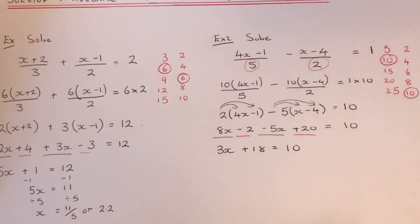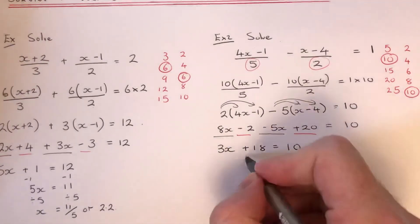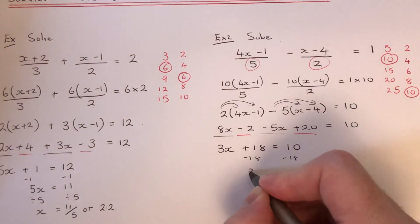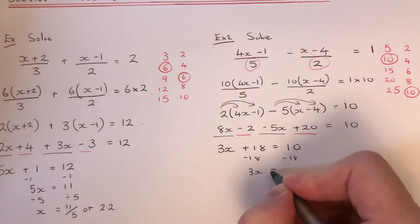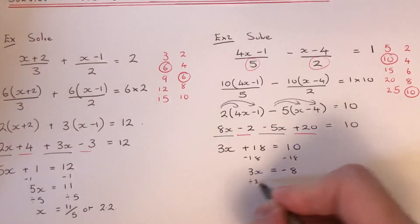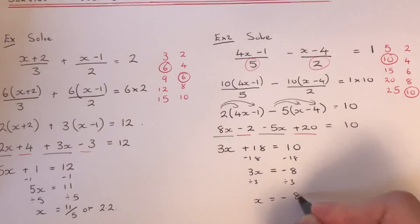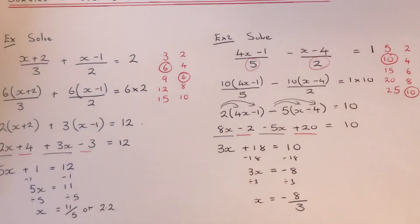We now just need to do the opposites to find the value of x. The opposite to plus 18 is minus 18. So that will give us 3x equals minus 8. And then we just need to divide by 3. So we get minus 8 over 3, and that's our final answer.